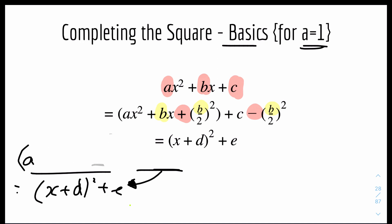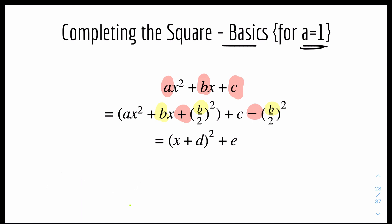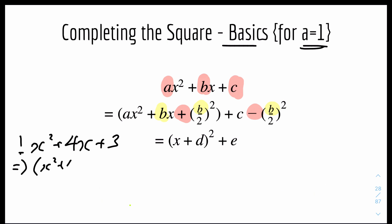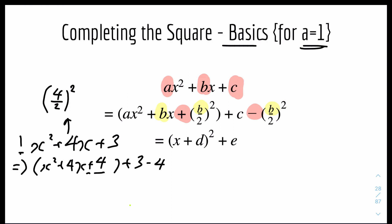Let's do one example to make sure you all understand. Let's say we have x² + 4x + 3. You first separate the c: write x² + 4x, leave a gap, plus 3. The new c coefficient would be (4 ÷ 2)² = 2² = 4. So if you plus 4 in the bracket, you have to minus 4 on the outside. This simplifies to (x + 2)² — because the value inside is just b ÷ 2. The outside becomes 3 − 4 = −1, giving the final answer (x + 2)² − 1.